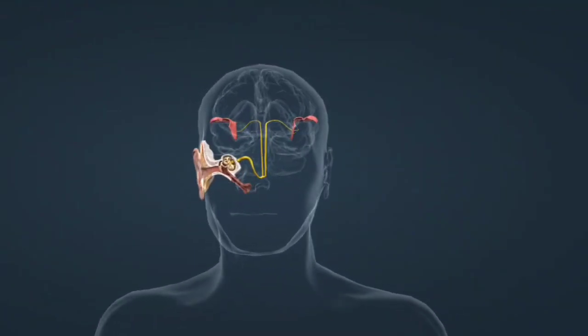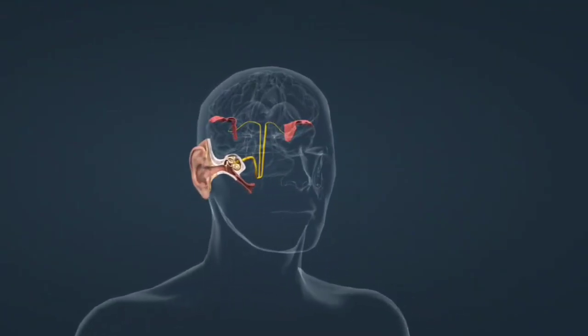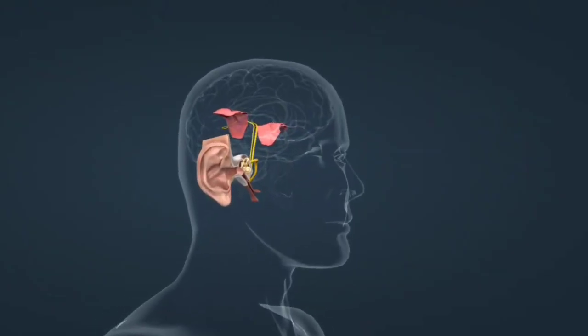The hearing mechanism of the human ear involves the conversion of sound waves into electrical signals that the brain can interpret.